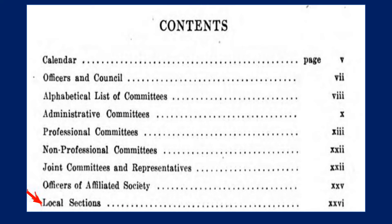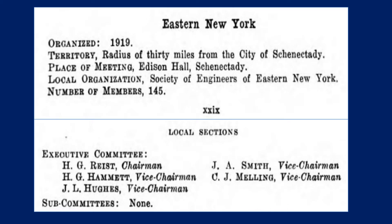I've scrolled down in that book and found where they list the information for the local sections. When I go to that page I can start reading through and I see the one I'm looking for that includes Schenectady, New York. They have renamed the section — at the time it was created it was called Eastern New York section, organized 1919, with 145 members. On the next page they listed the names I'm looking for: the executive committee. The first chair was H.G. Reist — R-E-I-S-T.